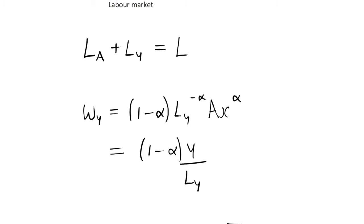In the previous videos we've been looking at the sectors of this R&D Romer model and now we can tie it all together in this video by looking at the labour and goods markets to see what our actual results are for the aggregate economy.